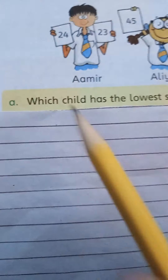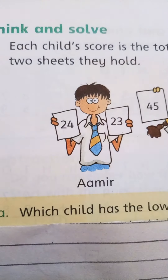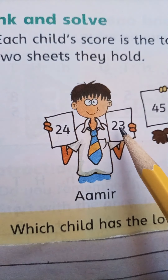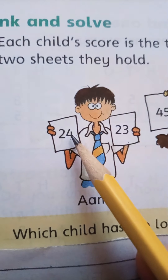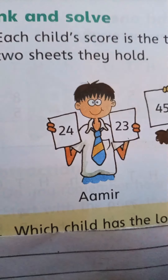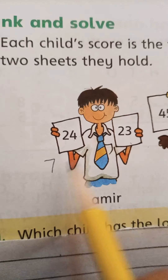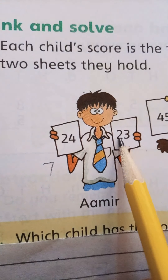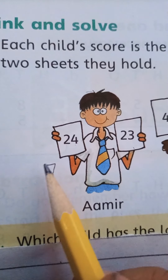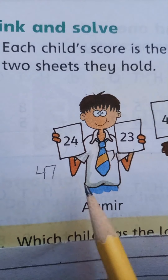Here is our first question — which child has the lowest score? To find out the lowest and highest score, we will find the total score of each student. Let's start from Amir. Amir has 24 and 23. We will add the ones first — 4 and 3 gives 7. Next the tens — 2 and 2 gives 4. So Amir's total marks are 47.